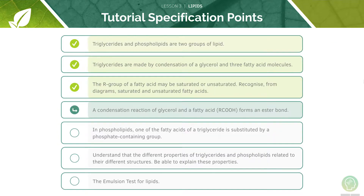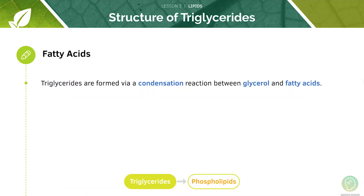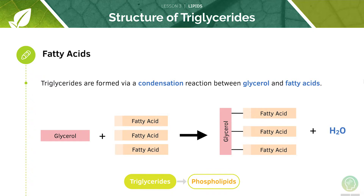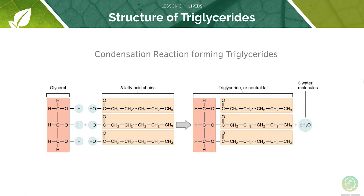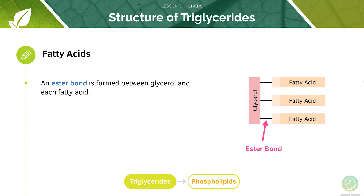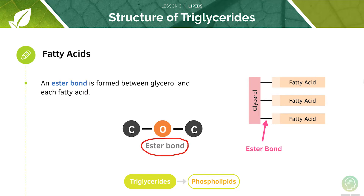Now we will look at the condensation reactions of glycerol and fatty acids. As you may have guessed, triglyceride formation occurs via a condensation reaction, covalently bonding one molecule of glycerol to three molecules of fatty acids. Here we can see the process in more detail. It is important to remember that each of the glycerols is bonded to a fatty acid by a carbon-oxygen-carbon bond, or a COC bond. This bond is known as an ester bond and is very important for you to remember.